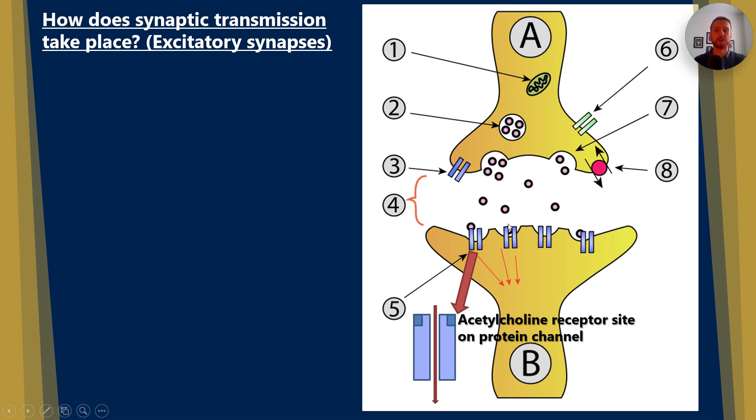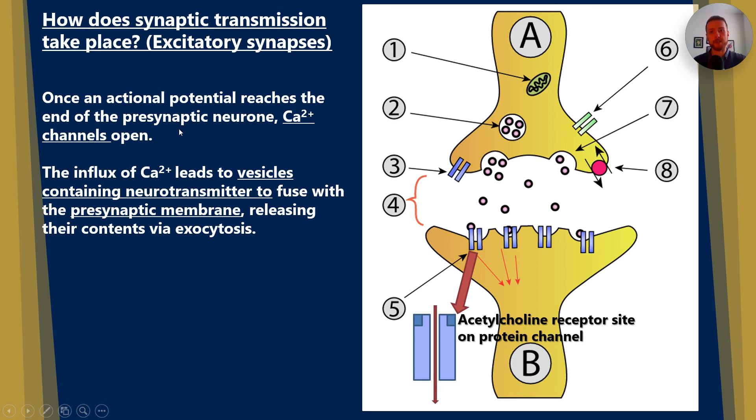So how does synaptic transmission take place? Well, first we'll look at excitatory synapses. Once an action potential reaches the end of the presynaptic neuron, calcium ion channels will open. The influx of calcium ions leads to vesicles containing neurotransmitters fusing with the pre. Remember, pre means before, so preschool is before school in America, releasing their contents via exocytosis.